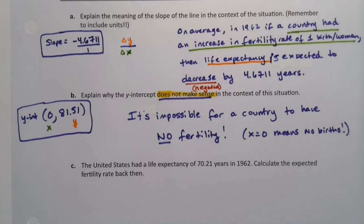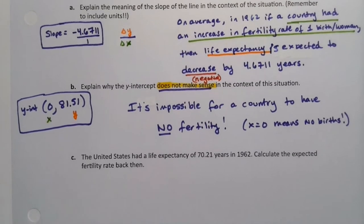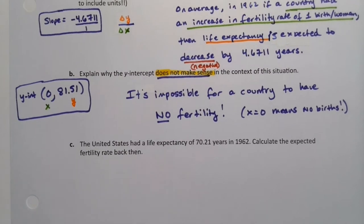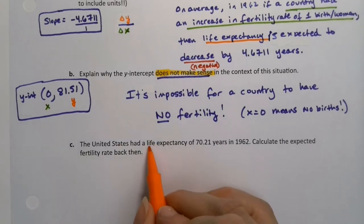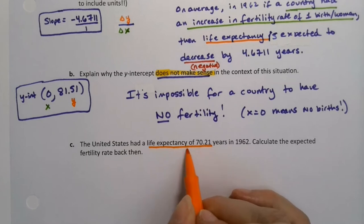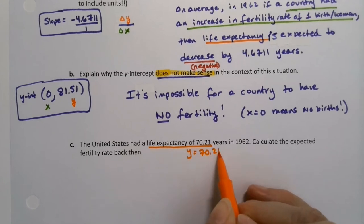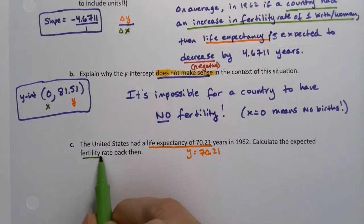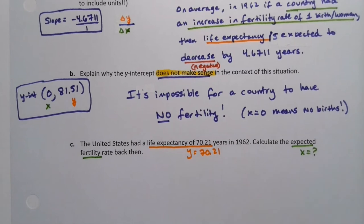Now, the U.S. had a life expectancy of 70.21 years back in 1962. And they want us to calculate the expected fertility rate back then. That's a math teacher question. So, read very carefully, because they're telling us life expectancy. That's y. I mean, they're telling us y is 70.21 back in 1962. Then they're asking us to calculate the expected fertility. In other words, what's x?